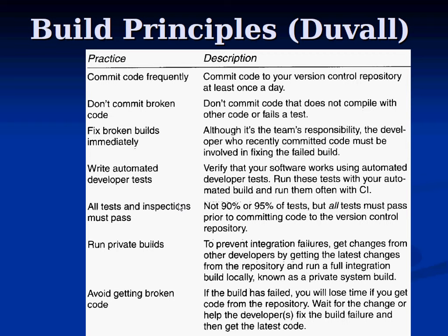Don't commit broken code. If it doesn't compile on your system, don't check it in. If it doesn't pass a basic smoke test, don't check it in. If you have a broken build, go fix it immediately — the developer who committed the code is typically involved in fixing it. Write developer tests; you don't want to depend on manual testing.